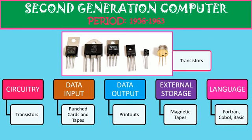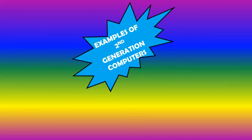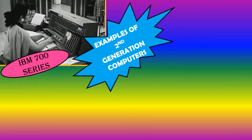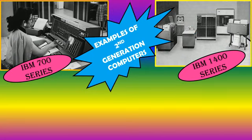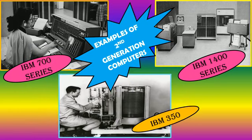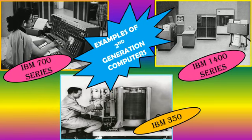Some improvements were made over first generation computers, and so the second generation computers were made. Examples of second generation computers include the IBM 700 series, the IBM 1400 series, and the IBM 350. You can see that the size is a little bit reduced.